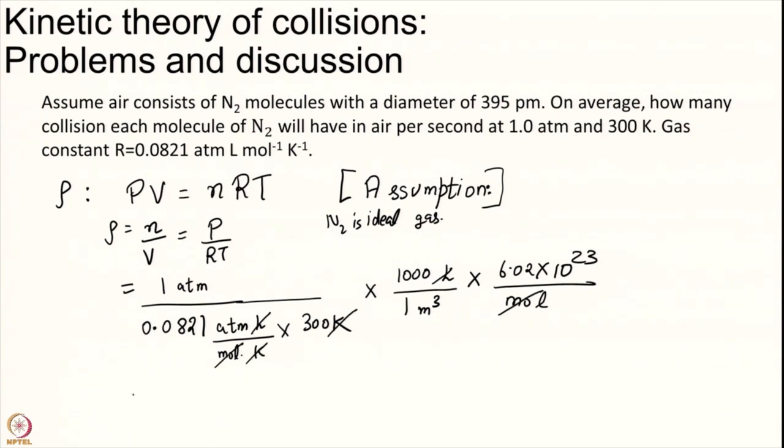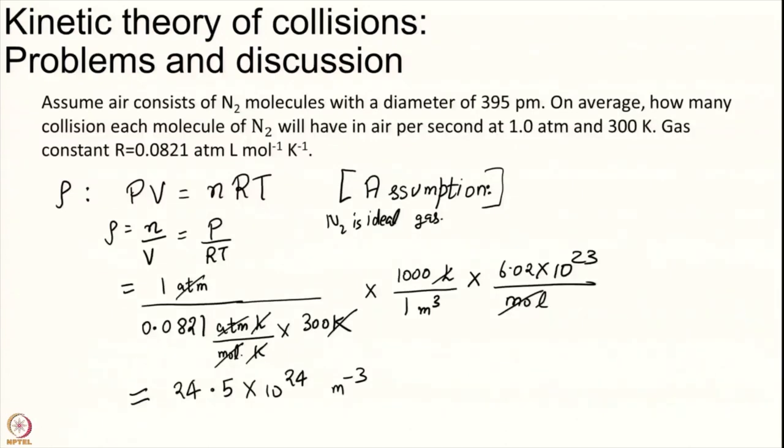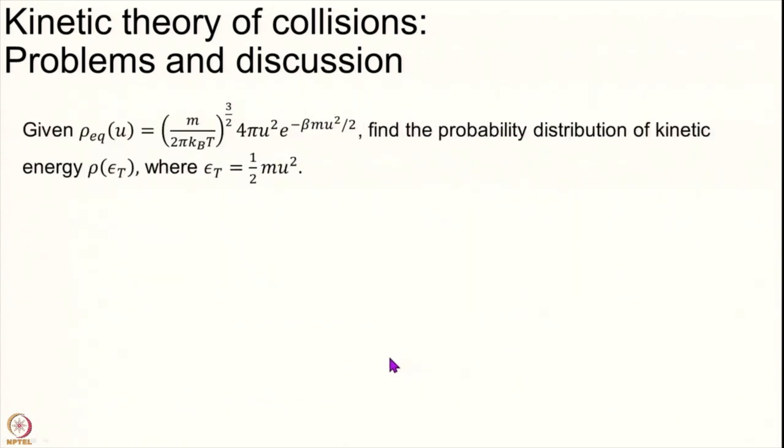This gives 24.5×10²⁴ meter⁻³. Atmosphere also cancels. Make sure numbers are right - I'm punching them on a calculator and there's a chance I made a mistake. It's upon you to verify these numbers are correct. I still have to find the final answer, which is now easy.